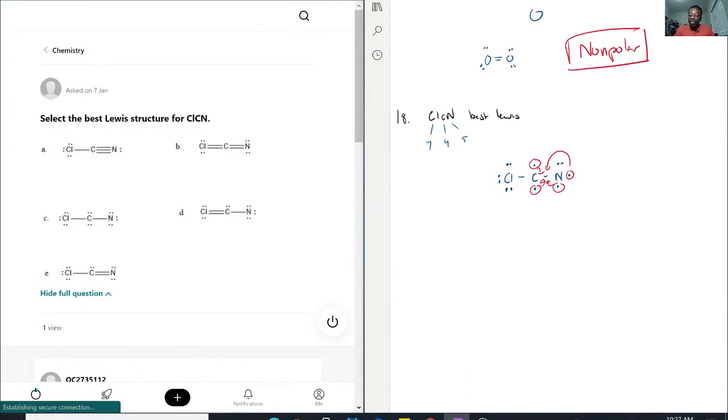If I were to redraw, I would have chlorine-carbon-nitrogen, and nitrogen still has its lone pair, carbon is done, and chlorine would still have its lone pairs.